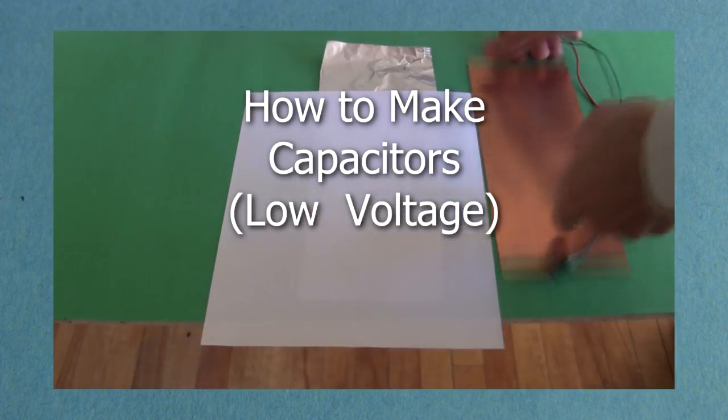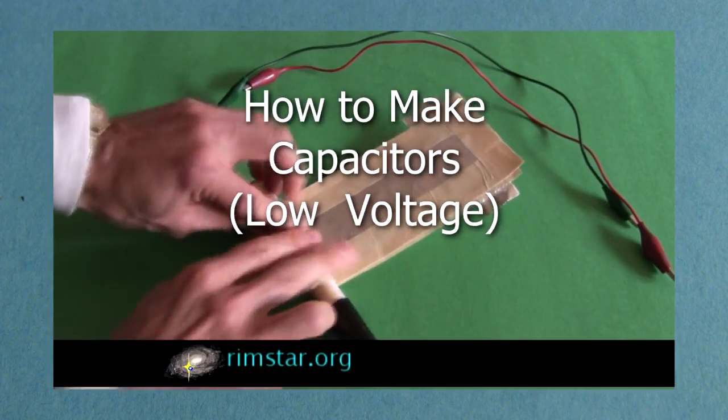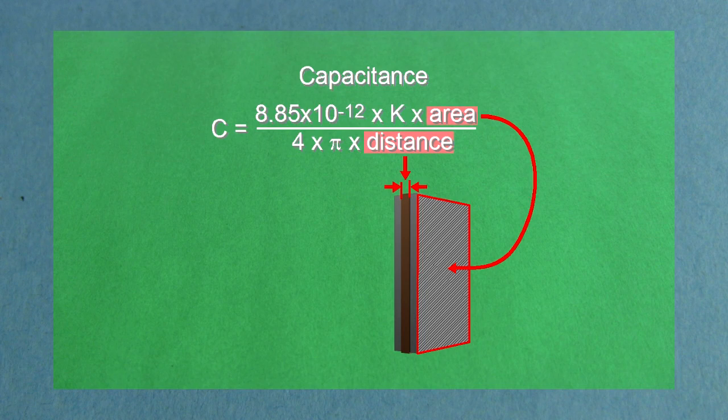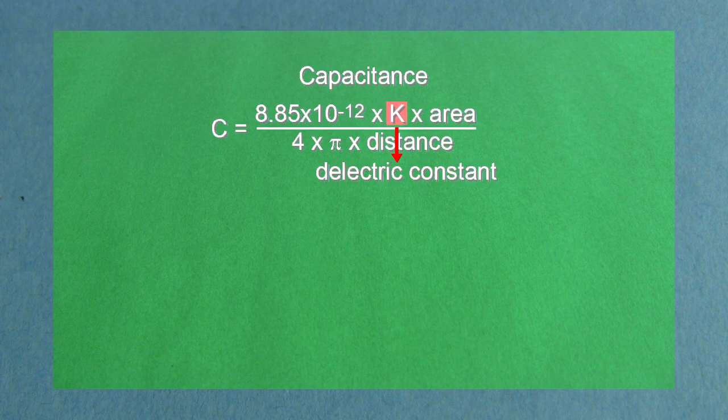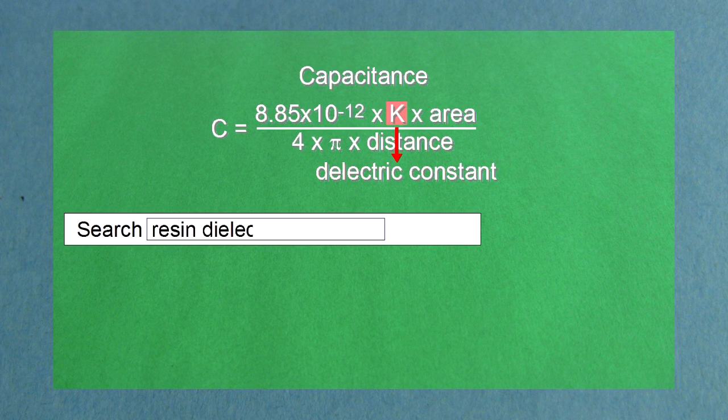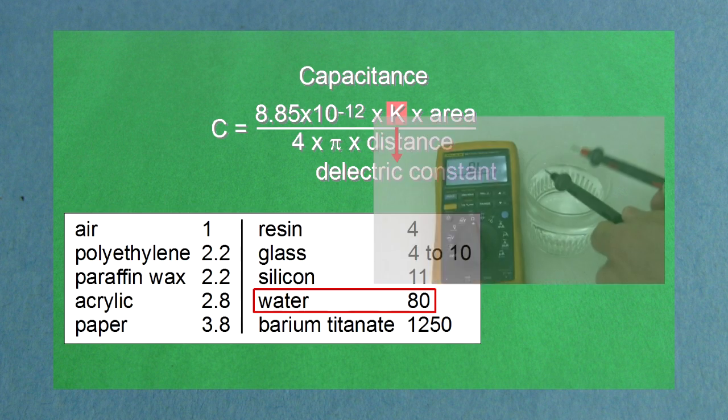I've already gone over the basics of making capacitors in my how to make low voltage capacitors video. Things like plate area, distance between the plates, capacitance, and dielectric constant. These things still apply to high voltage capacitors, so make sure you watch that video too.